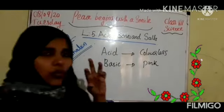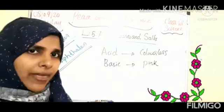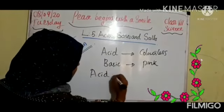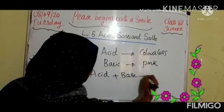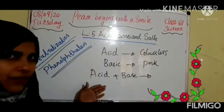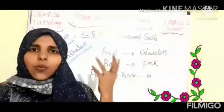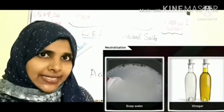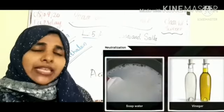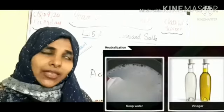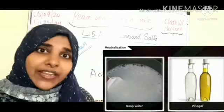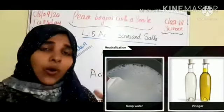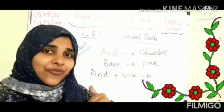All of you have to do one experiment at home. You have to mix an acid and a base. You will get a neutralized solution. For example, you can take soap solution — it is a base, basic in nature. Mix that soap solution with an acidic solution, that is vinegar. Mix with vinegar — what will you get?